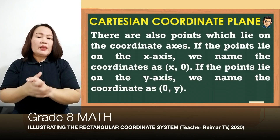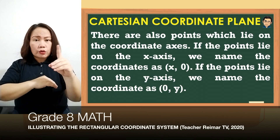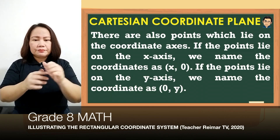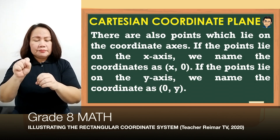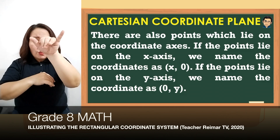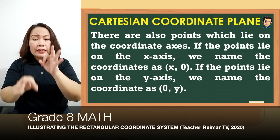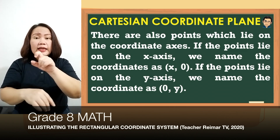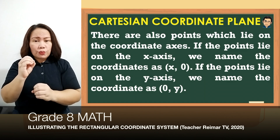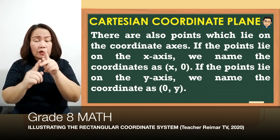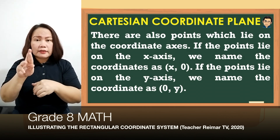There are also points which lie on the coordinate axis — points located on the coordinate axis na wala sa mga quadrants. If the points lie on the x-axis, we name the coordinates as (x, 0). If the points lie on the y-axis, we name the coordinates as (0, y). Kapag wala pong 0 sa isa man sa mga coordinates, ibig sabihin nasa quadrants po sila, hindi sa coordinate axis.